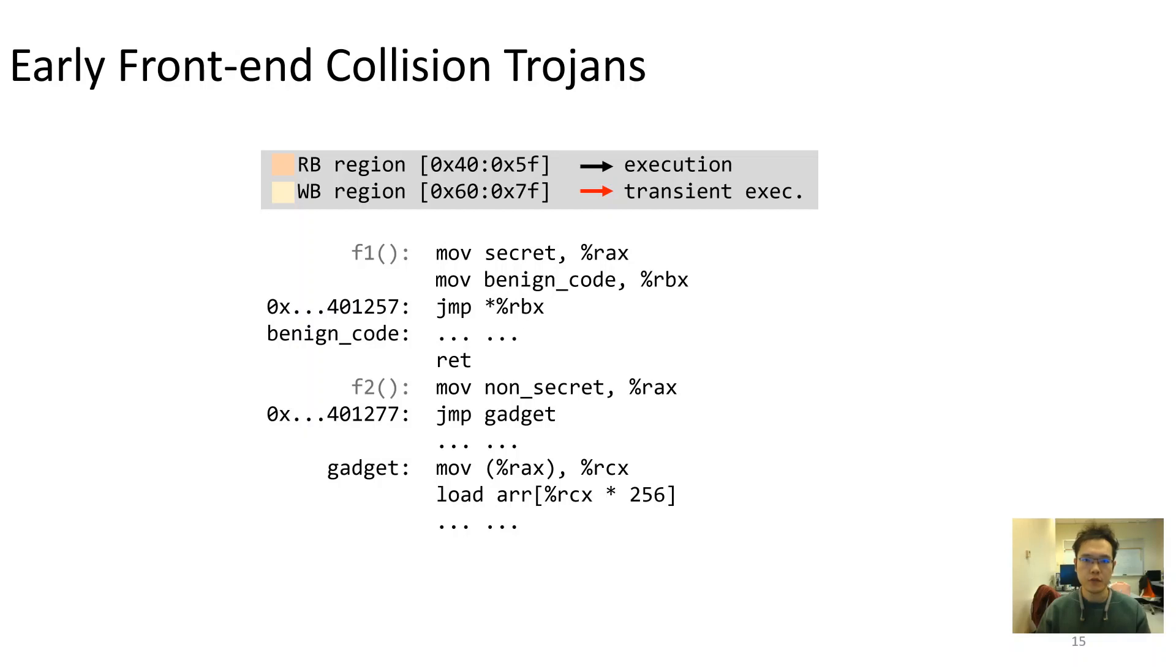Here, we demonstrate how a transient trojan could leverage such collision anomalies. We first execute function F2, which moves a non-secret value into a register and further transfer the execution to a gadget which outputs the non-secret value via leaving a trace in cache.